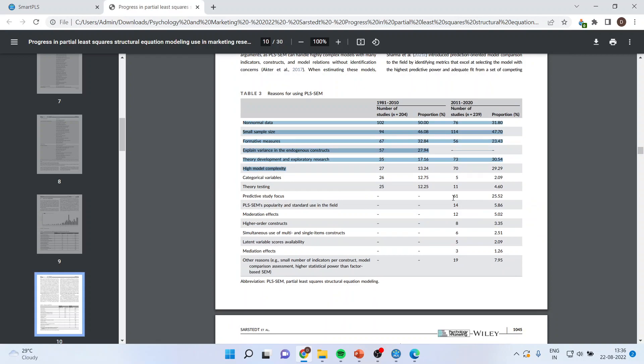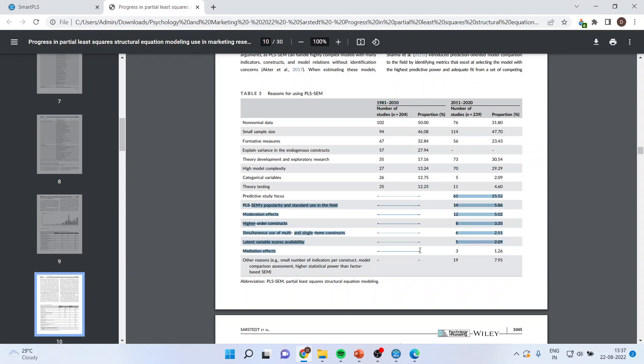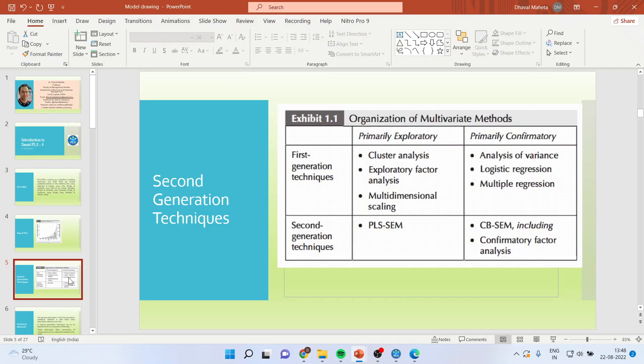Now, if I talk about predictive study focus, it is a development in the last decade only. Moderation effects, 12 studies found only in the last decade. Higher order constructs, 8 studies. Mediation effect, 3 studies. From 1981 to 2010, we cannot find anything here. There are other reasons why people have started using Smart PLS or PLS-SEM technique, because if the number of indicators per construct are less, then also PLS-SEM can work very nicely.